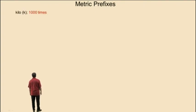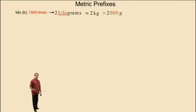Let's begin with the prefix kilo, abbreviated with the letter k. Kilo means 1,000 times. Therefore, 2 kilograms, written as 2 kg, is equal to 2,000 grams.